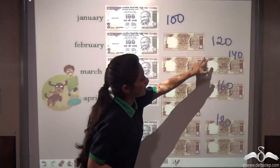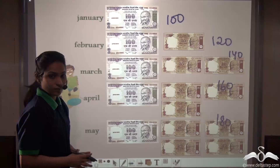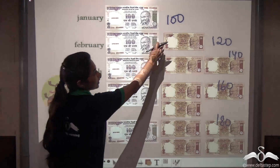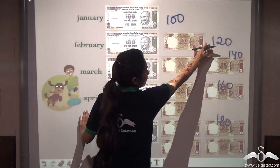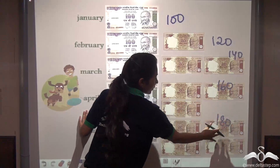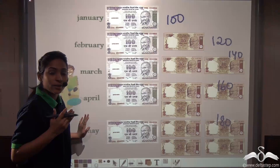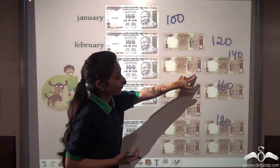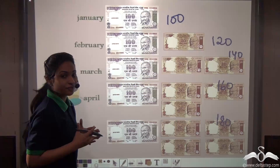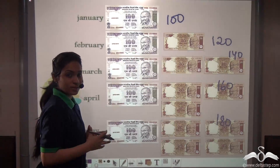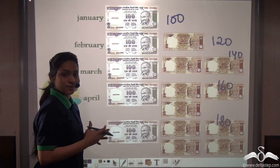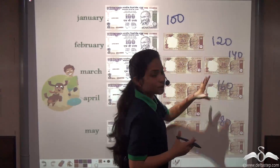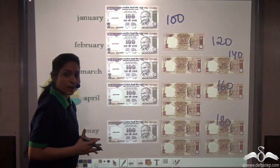Can you tell me whether this is an AP series? Here you can see that 100, 120, 140, 160, 180 — they are having a common difference of how much? Well, 20 is getting incremented each month. So the common difference here is 20 rupees. This is following an AP series because the common difference between any two terms is constant, that is 20.